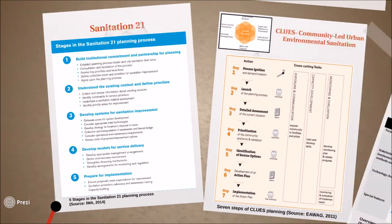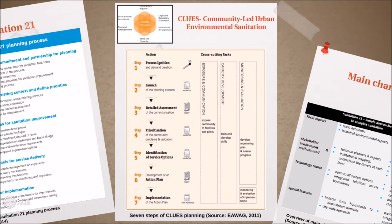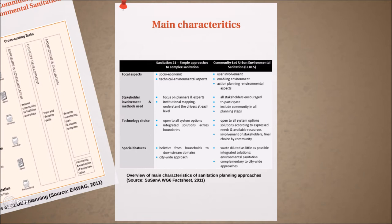The second planning approach is Community-Led Urban Environmental Sanitation, popularly called CLUES. This planning approach puts forward a framework which balances the needs of people with those of the environment to support humanity and a healthy life. The CLUES approach includes seven planning steps, three cross-cutting tasks relevant throughout the entire planning process, and an enabling environment required for sustainable integration. The Sanitation 21 focuses on economic and technical aspects for planners and experts with institutional mapping, making it of interest for local authorities, utilities, non-governmental organizations, and consultants.